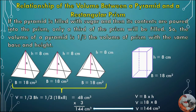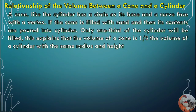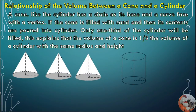You can see the volume of 3 pyramids equals the volume of 1 rectangular prism, when the base area and height of both are equal. Next, we have the relationship of the volume between a cone and a cylinder. A cone, like the cylinder, has a circle as its base and a curved face with a vertex. If the cone is filled with sand and poured into the cylinder, only one-third of the cylinder will be filled. This means the volume of a cone is one-third the volume of a cylinder with the same radius and height.